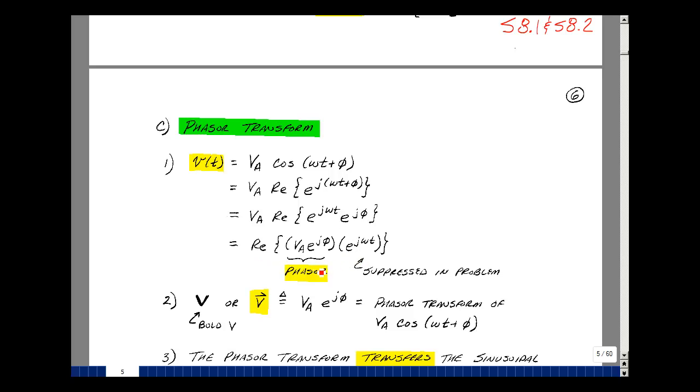You can also do this for current, and this is the phasor transform of V of t. Now, in most textbooks, they use a bold letter, but it's kind of hard with handwriting. So I'm going to use a letter V here with a broken arrow, and this is going to mean the magnitude and the angle of the phasor. Again, this would be the phasor transform of V sub a times the cosine of omega t plus phi.